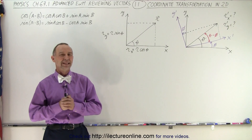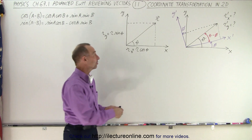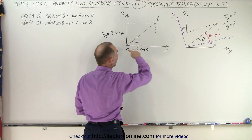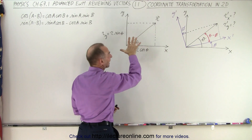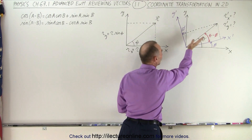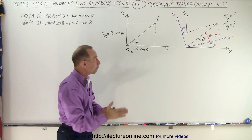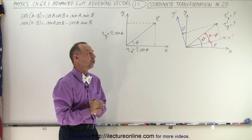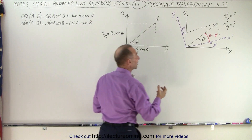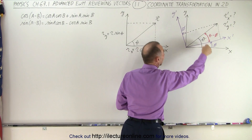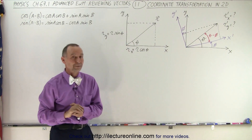Welcome to our lecture online. In this video we're going to take a vector, let's say the R vector, which is defined in the XY coordinate system in two dimensions, and we're going to transform that into a new coordinate system that's being rotated through an angle phi, and we'll call that the X' Y' coordinate system. So, how do we come up with a transformation matrix that defines the R vector in the new coordinate system relative to the R vector in the old coordinate system?